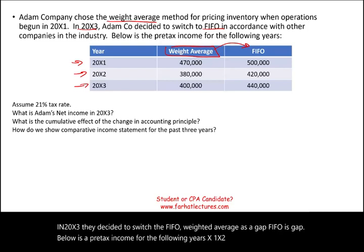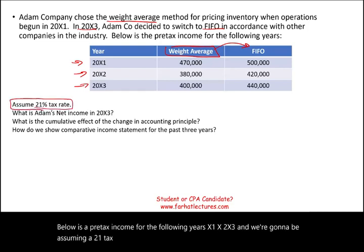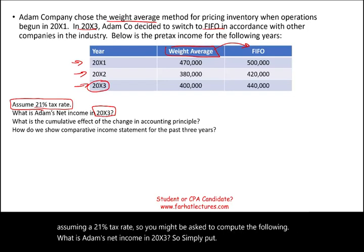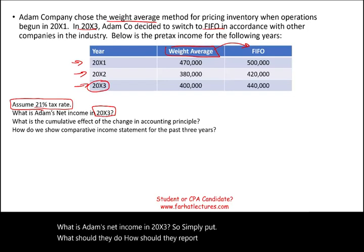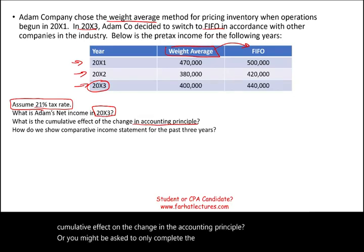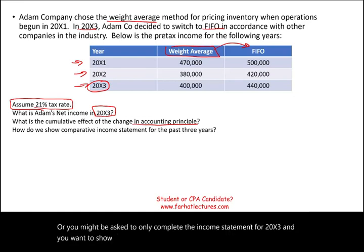Assuming a 21% tax rate, you might be asked to compute the following: What is Adam's net income in 20x3 — how should they report income in 20x3? What is the cumulative effect of the change in accounting principle? Or you might be asked to complete the income statement for 20x3 and show the cumulative effect — how and where do we show it?